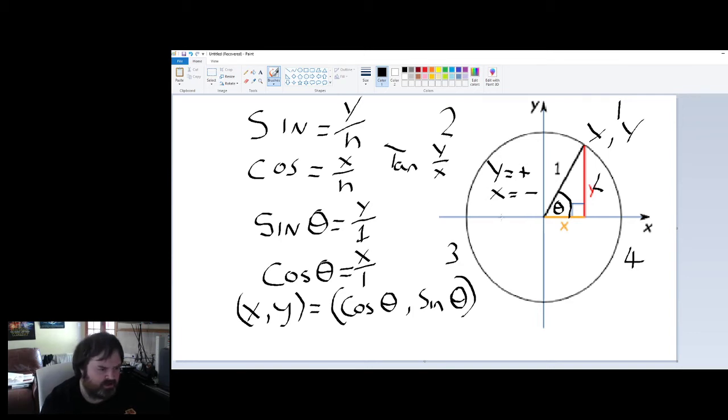Let's go down here to quadrant 3. So, in this one here, y is going to be negative and x is going to be negative. So sine would be negative. Cos would be negative. But tan is going to be negative divided by negative, which gives us positive. So tan's positive.